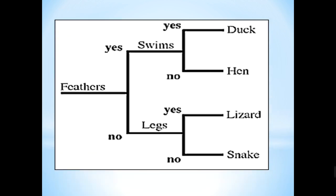Let's take another example with four animals. We choose the lizard — but we don't know it's a lizard yet. Does it have feathers? No. Does it have legs? Yes — so it is the lizard.